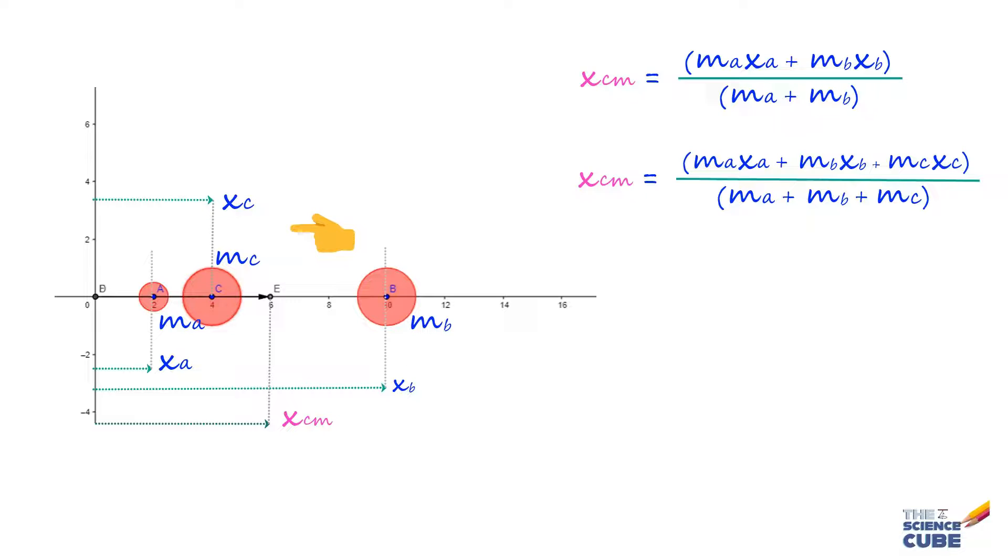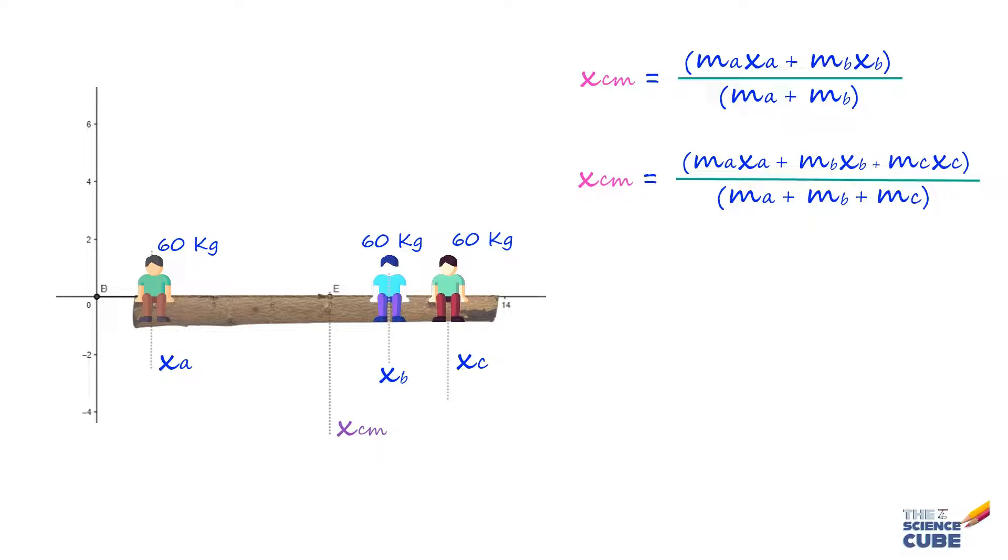Well, in real life, you could have been given a setup where there are three people of roughly equal mass, say 60 kilograms sitting on a light piece of log. And their positions are, let's say xa is equal to two meters, xb is equal to 10, and xc is equal to 12. And we are asked to find the center of mass of the setup, assuming the log's mass can be ignored. Then we can use this formula right away and put the values in respective places to find the location of the center of mass that would be eight meters.